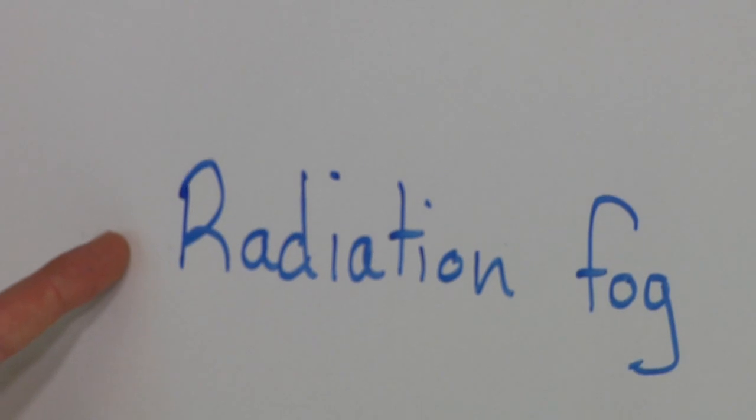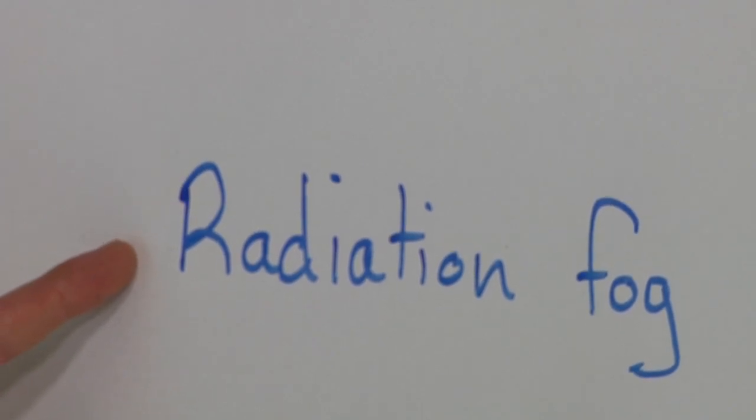Our first type of fog is radiation fog. Radiation fog commonly occurs in valleys. As the sun goes down, the earth releases latent heat back into the air, and if the air is cool enough, this cools the air down to the dew point and it turns into fog. Since cooler air is heavier than warm air, it settles down due to gravity — that's why you often find radiation fog in valley bottoms.